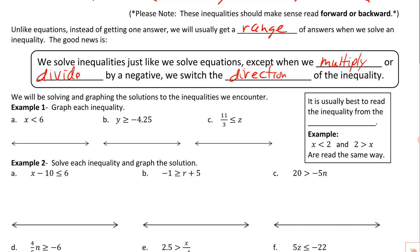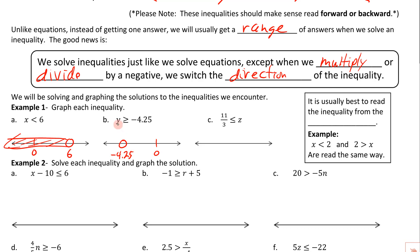As a quick review, if we were to graph x < 6 on a number line, I put 0 and circle 6 — leave it open — and since x is less than 6, we shade to the left. On the next one with y ≥ -4.25, put a circle at negative 4.25, close it in since it has the equal sign, and read from the variable: y is greater than or equal to negative 4.5, so shade to the right.